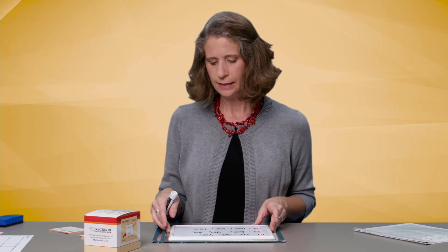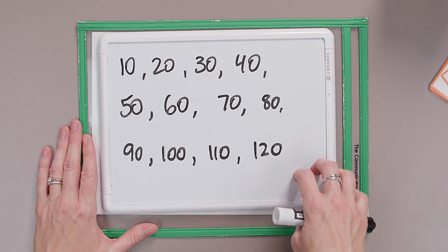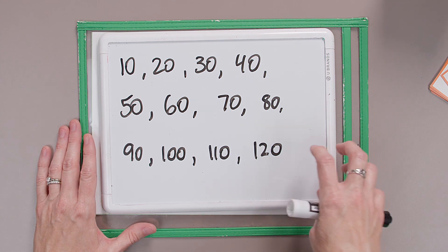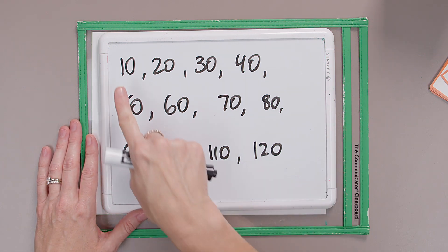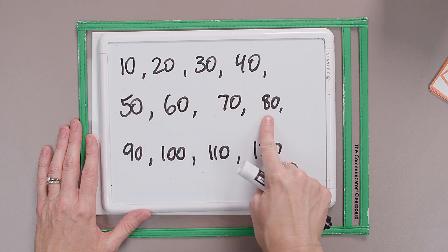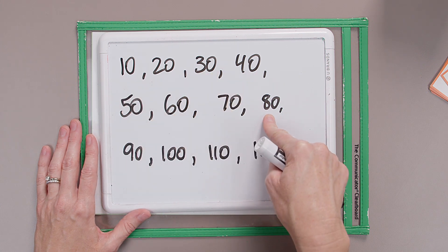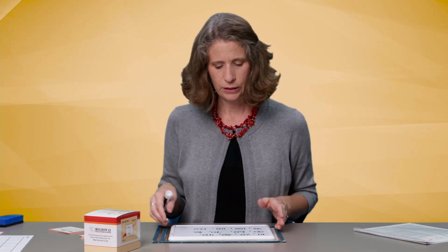You got it. Let's think about patterns that we see in these multiples of 10. I'm seeing that they all have a zero in the ones place. When I have multiples of 10, I'm going to have that zero in the ones place. It's a great thing to remember.